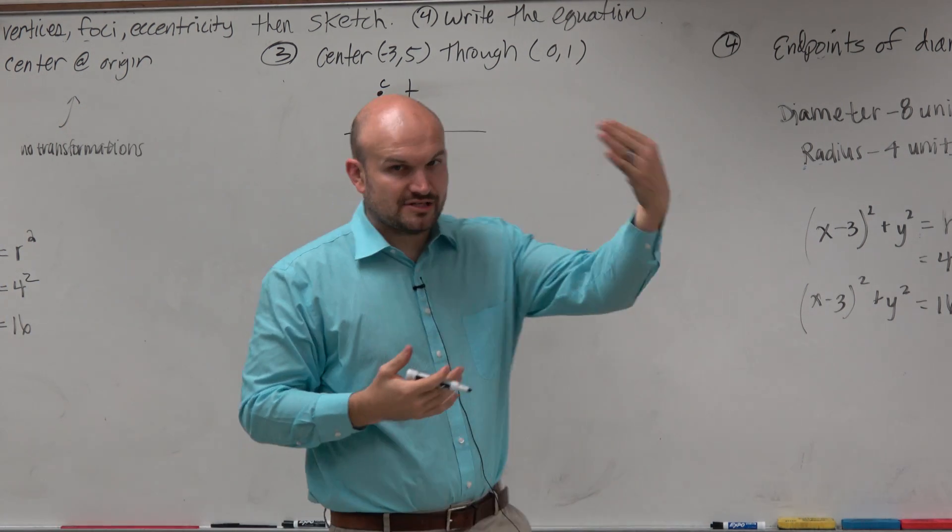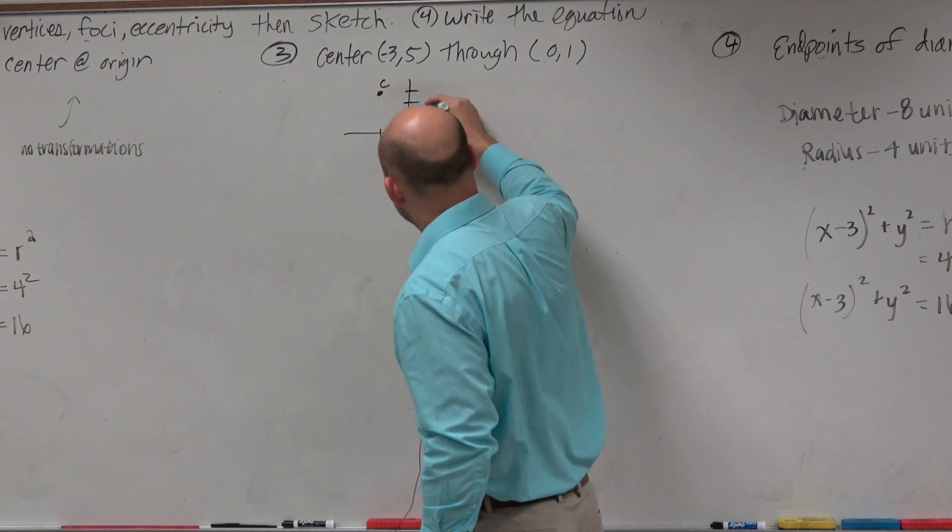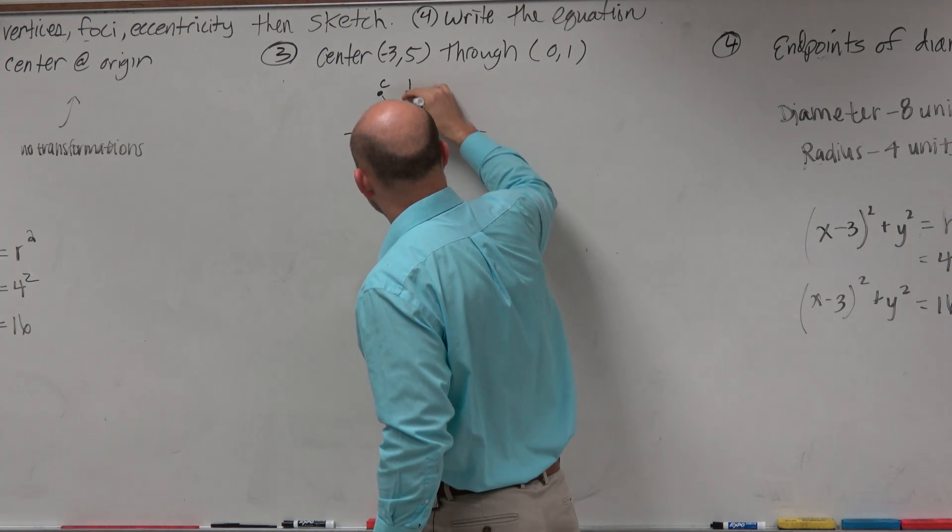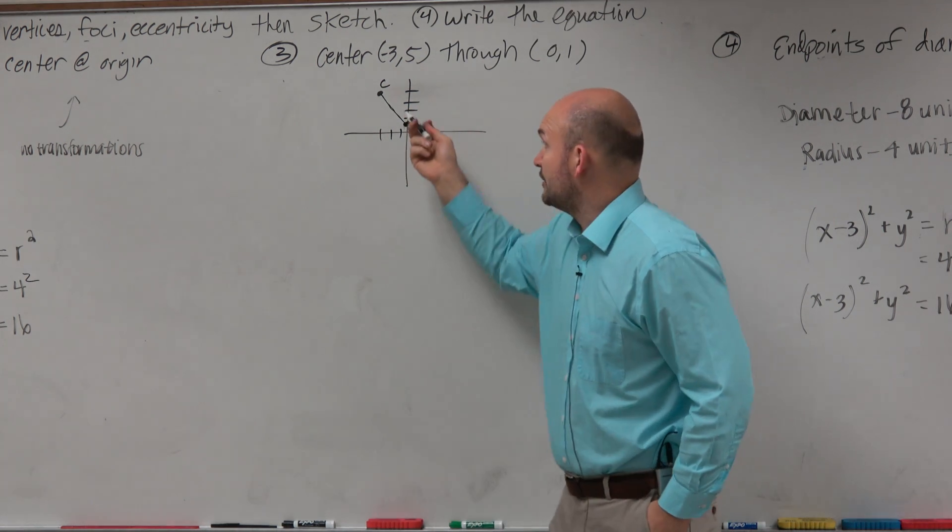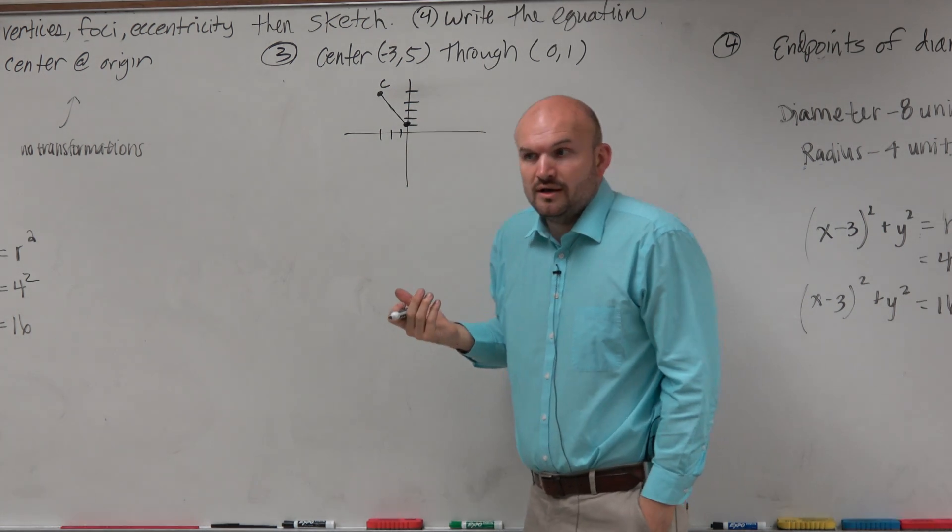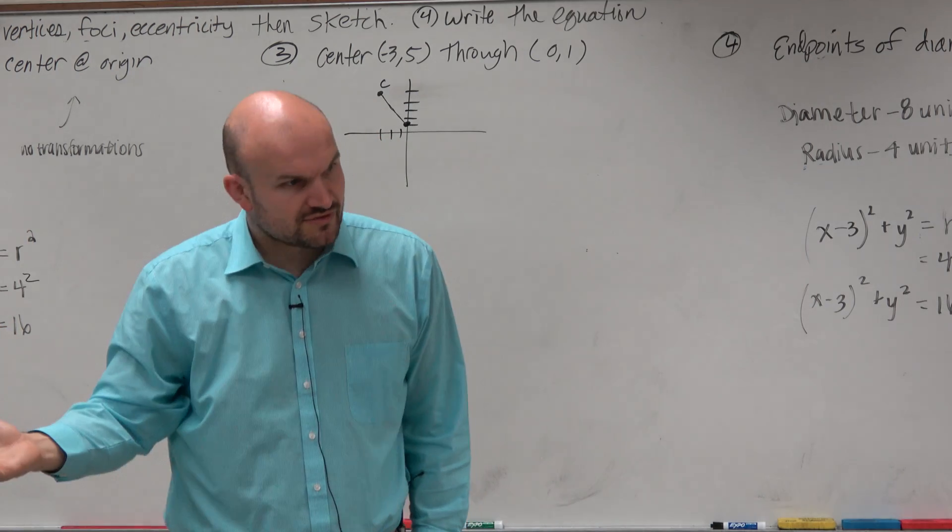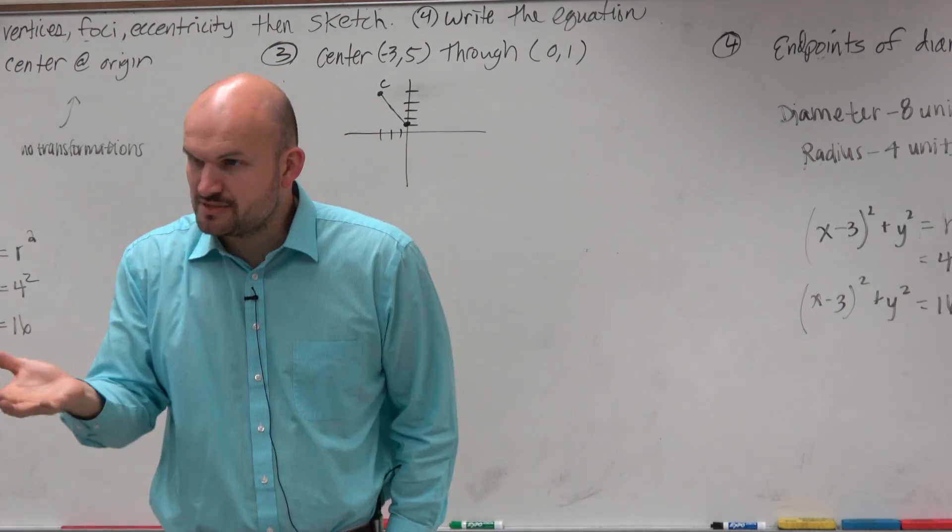So obviously, if I have a center and I have a point, then I know that this distance from here to here represents the radius of the circle. I've just got to figure out that length. So from geometry class, we could just use the distance formula, and I would expect you guys to be able to do that.